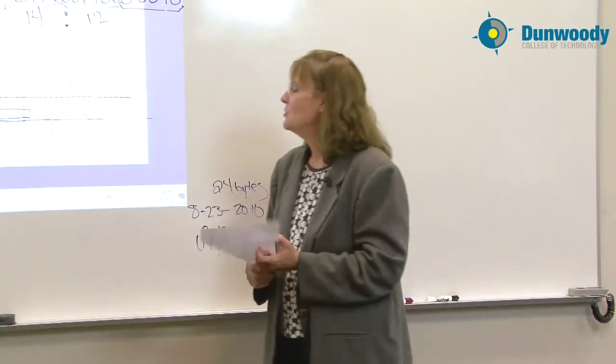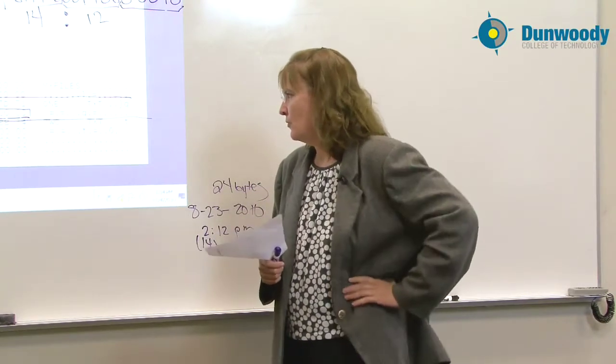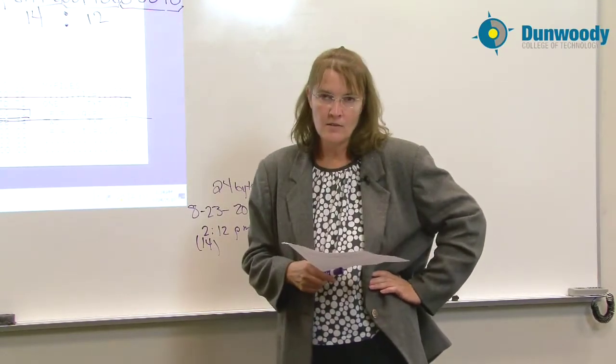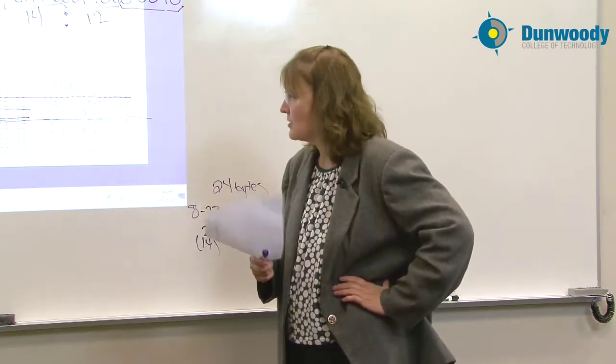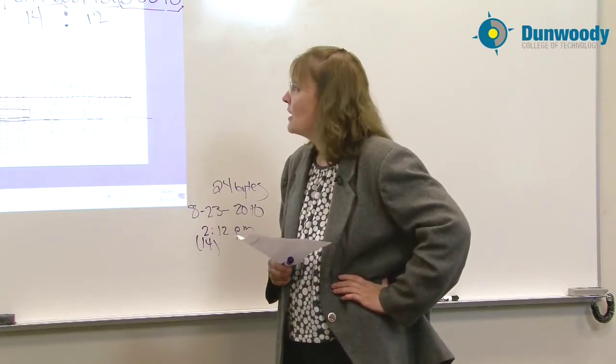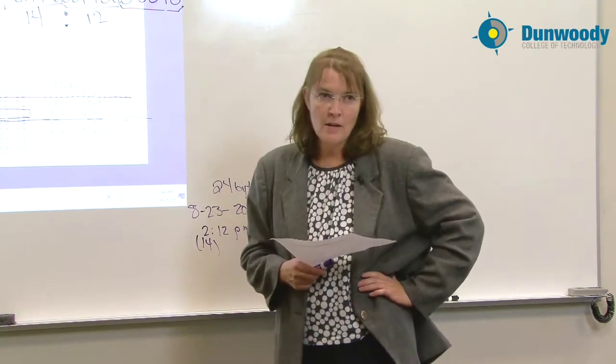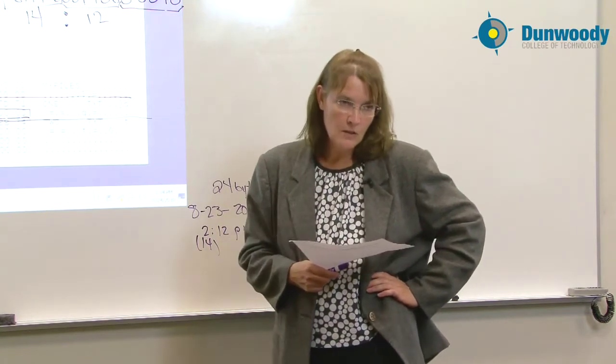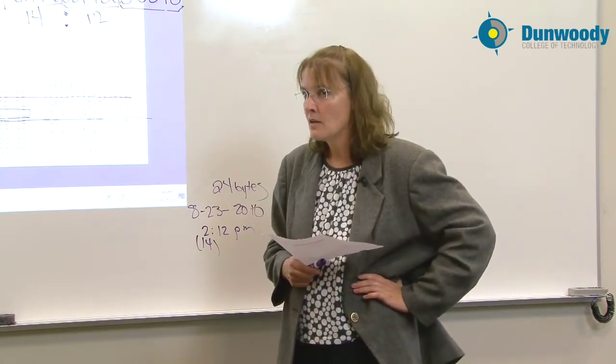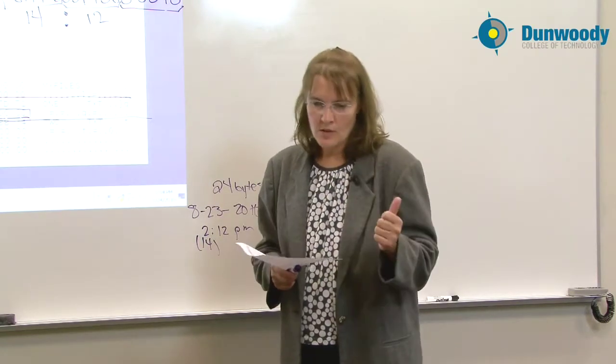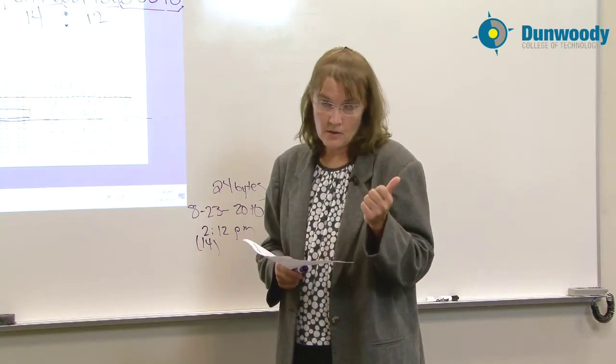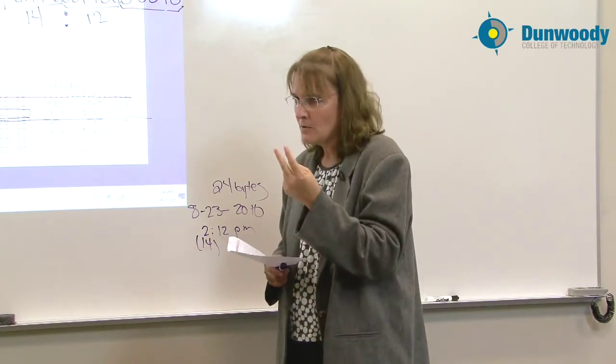So there we have two portions of the high-level format for the FAT file system. We did not look at the actual file allocation table in this session. We saw that when a disk is formatted FAT, it does the low-level format, laying out the tracks in the sectors. But then it lays out the file system, the boot sector, very first sector on the disk, two file allocation tables.